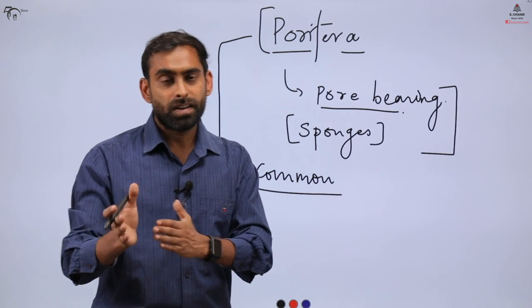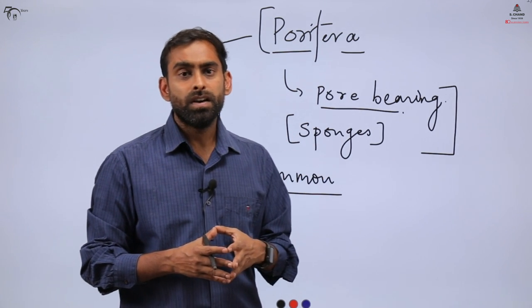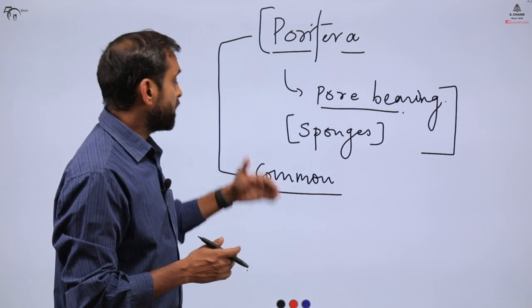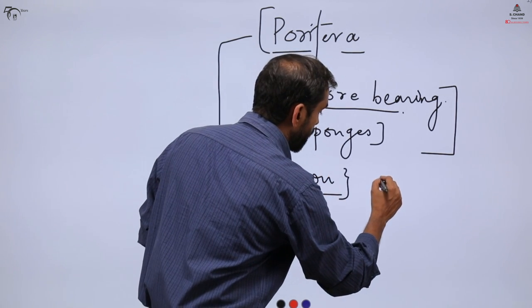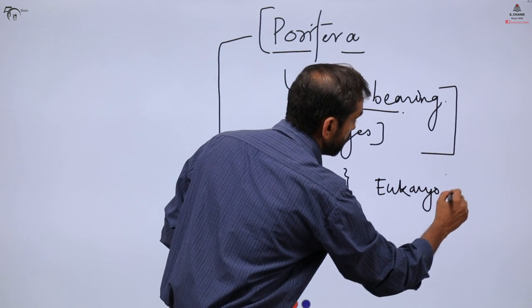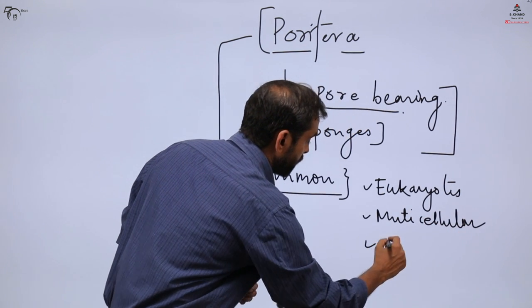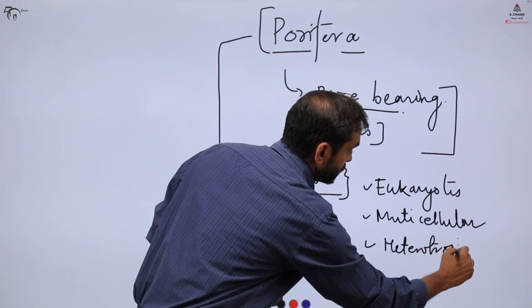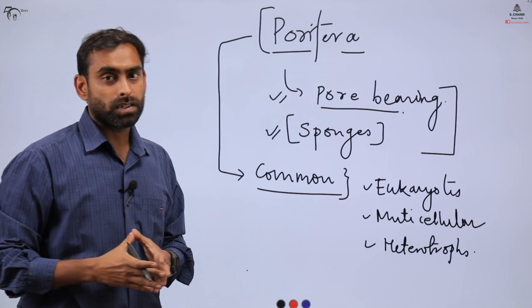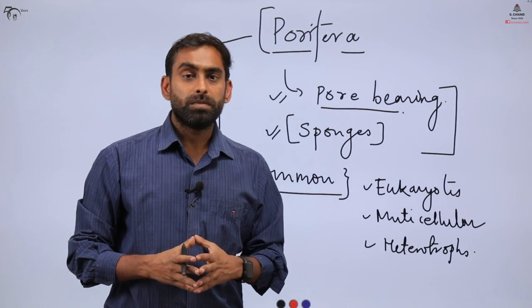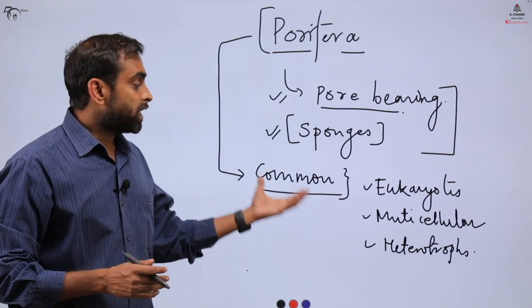Don't confuse it with phylums and kingdoms. In the previous videos we talked about kingdoms. In fact, Ernst Haeckel described this as an independent phylum in the group. So what are the common features? They are eukaryotes like any other organism, they are multicellular, and third thing is that they are heterotrophs. Now we will talk about some of the common features first, and then we will talk about their distinguishing features, and we will also learn how they have been classified.